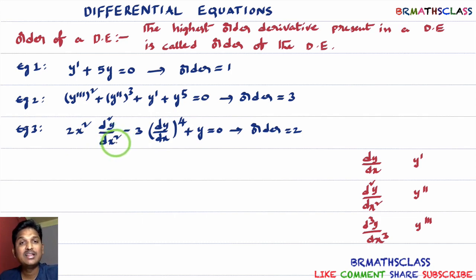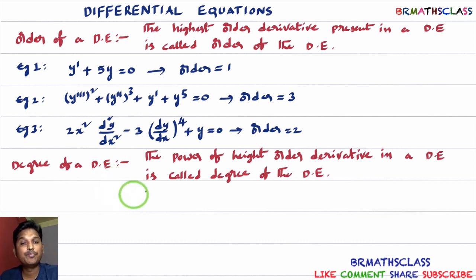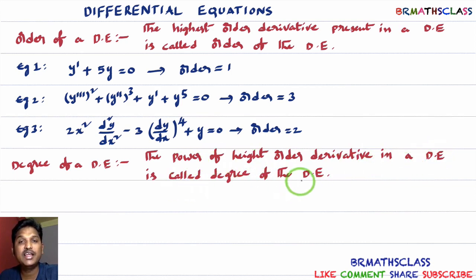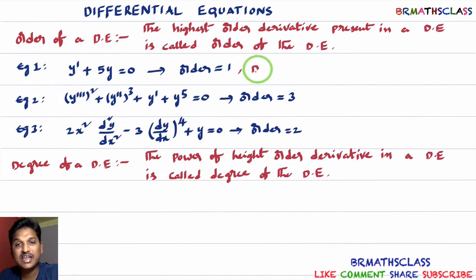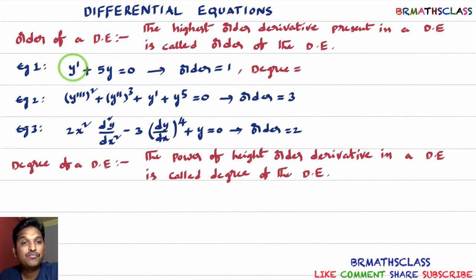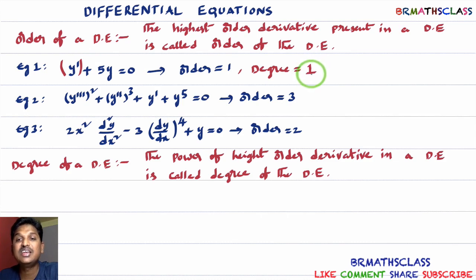Now we will learn the definition of degree of a differential equation. The power of the highest order derivative present in the differential equation is called the degree of the differential equation. In the first example, the highest order derivative is the first order derivative and its power is 1, so the degree of this differential equation is 1.